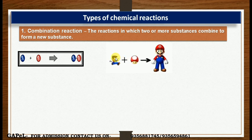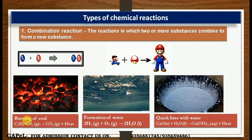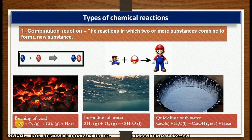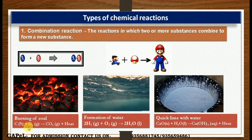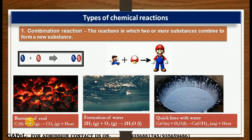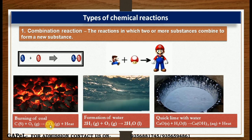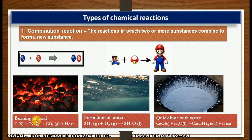So Mario combined with Army gives Super Mario — that's the analogy. The first example is burning of coal: carbon combines with oxygen. C combines with O to form CO2. So A plus B gives AB — that is the general form of a combination reaction.